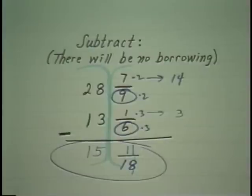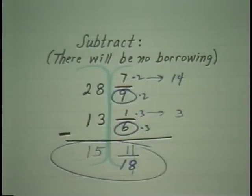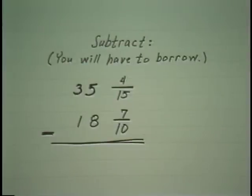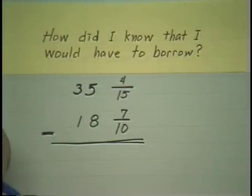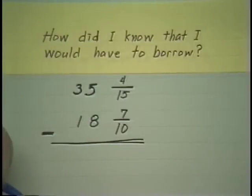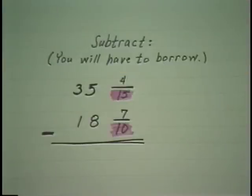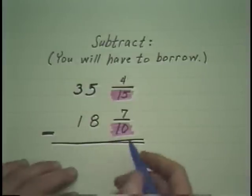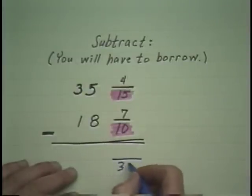But let's look at another one where sometimes this one will not subtract from that one. Here is a problem where we are going to have to do the process called borrowing. But before we do that we could ask, how did I know ahead of time that I would have to borrow? Essentially you don't. You just assume that you are not going to borrow, go ahead and begin your subtraction and see what happens. Again we ask what number will each of these divide into evenly, and that is 30.